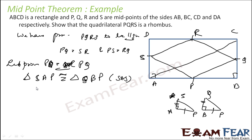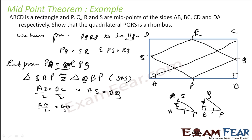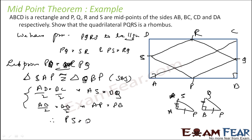Since AS equals BQ, AP equals PB, and the included angle is 90 degrees, triangle SAP is congruent to triangle QBP by SAS. Therefore PS equals PQ.